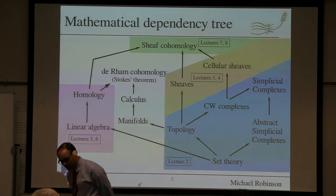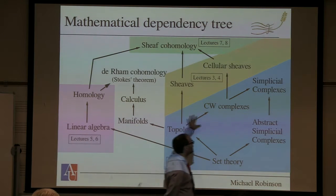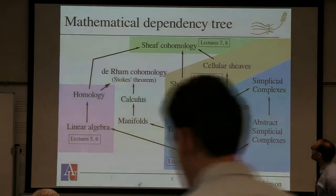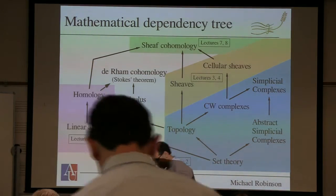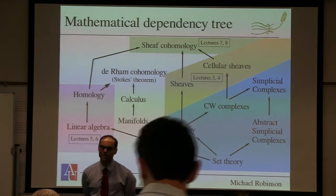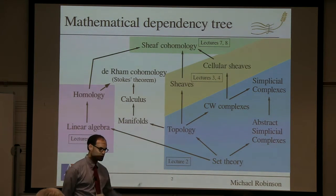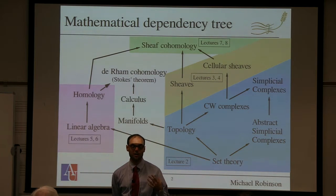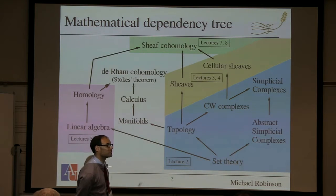Let's remind you where we are in the discussion. We talked last lecture about topology — that's this blue region. Now we're going to move up into the yellow region and talk about sheaves and what are called cellular sheaves. That will take us through this lecture and the next. This lecture will be mostly building up the theory and giving you some examples, and the next will talk about very concrete examples from data science.